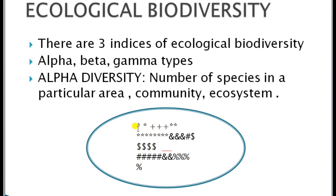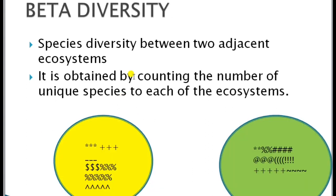Here we take different types of species, and by counting the different types of species present in this particular area, we can measure the alpha biodiversity. Next is beta diversity — species diversity between two adjacent ecosystems.